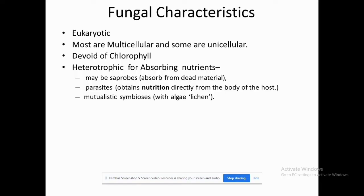Now you will learn about the characteristics of fungi. The first characteristic is that fungi are eukaryotic in nature — meaning they have a proper nucleus bound by a nuclear membrane, along with a cell wall, cell membrane, and double membrane-bound organelles. In contrast, prokaryotes lack double membrane-bound organelles and do not have a well-defined nucleus.